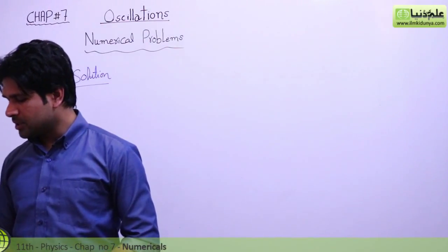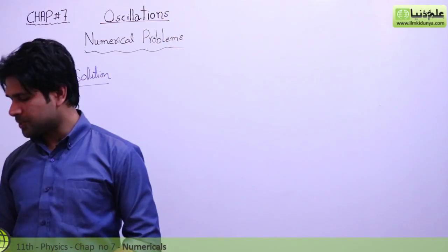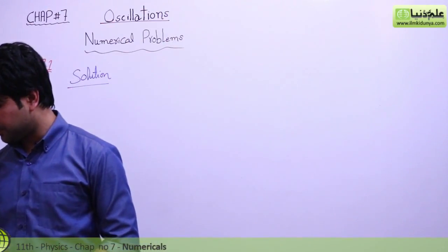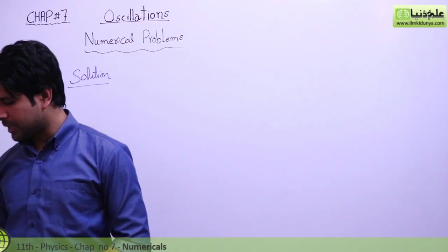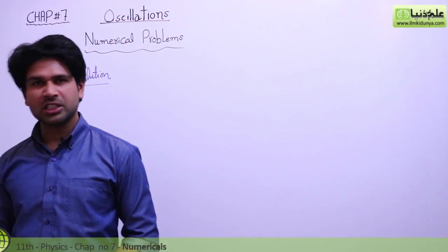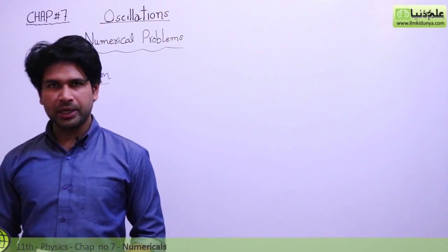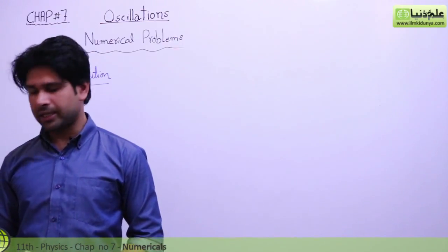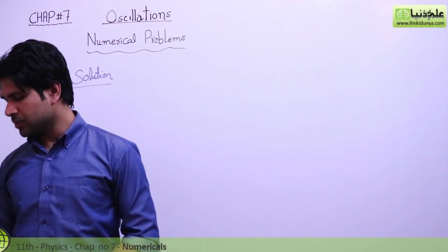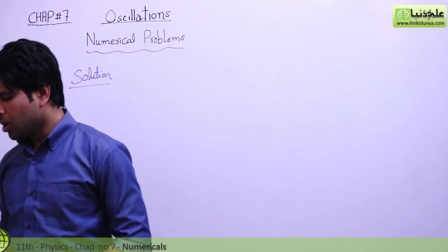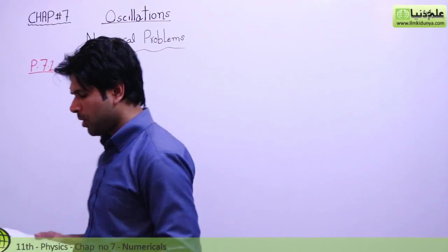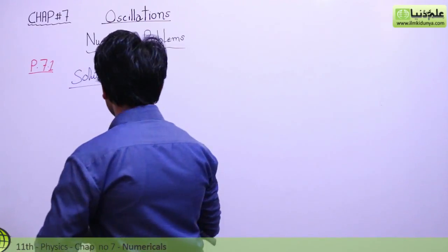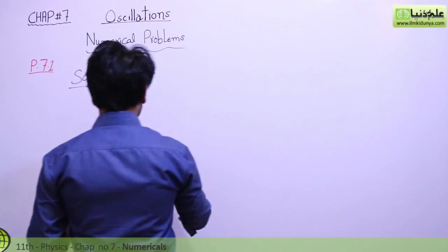I repeat — a 100.0 gram body hung on a spring elongates the spring by 4.0 centimeter. When a certain object is hung on the spring and vibrating, its period is 0.568 seconds. What is the mass of the object pulling the spring? To solve this numerical problem, first we will write the given data.